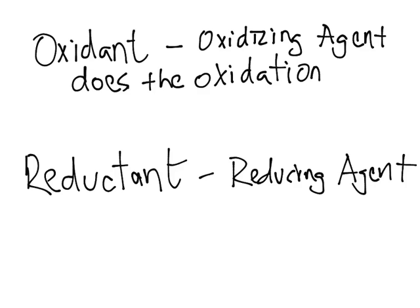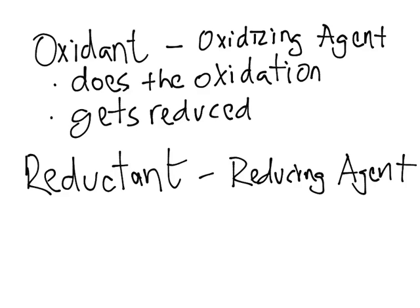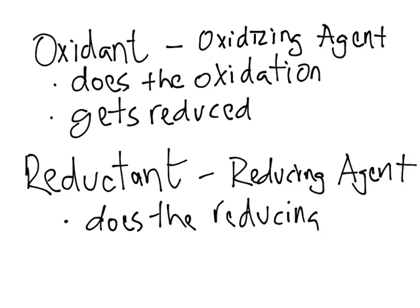So the oxidant gets reduced. Now I know this may sound confusing, but think about it: there's always going to be something getting oxidized and something getting reduced. If the oxidant is oxidizing the other element, then the oxidant will be what is getting reduced. And then the reductant does the reducing — it reduces the oxidant — and if the reductant reduces the other compound, it will itself get oxidized.